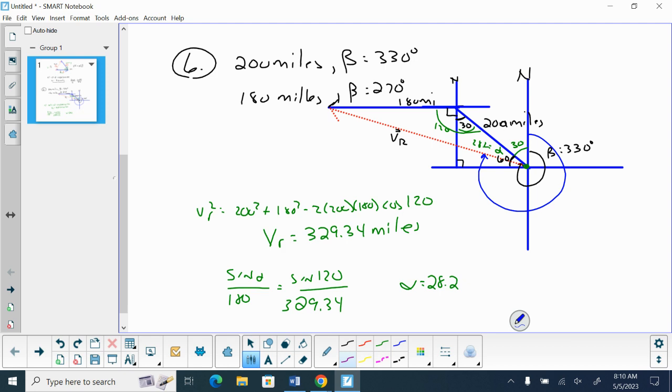Well, we had an initial bearing of 330, which took us from here all the way to this vector here. That gave us 330. We found this measure right here to be 28.2. Now what we want is just the measure of this rotation from here to here. So what do we have to do with these two values to be able to find just that rotation? That's right. Subtract 28.2 from 60.